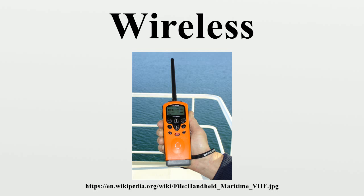In 1885, Thomas Edison used a vibrator magnet for induction transmission. In 1888, Edison deployed a system of signaling on the Lehigh Valley Railroad. In 1891, Edison obtained the wireless patent for this method using inductance. In 1888, Heinrich Hertz demonstrated the existence of electromagnetic waves, the underlying basis of most wireless technology. The theory of electromagnetic waves was predicted from the research of James Clerk Maxwell and Michael Faraday.